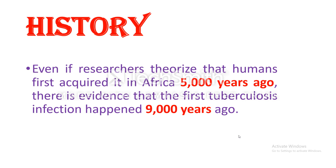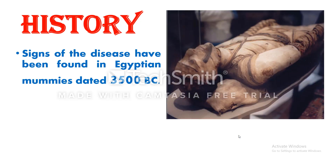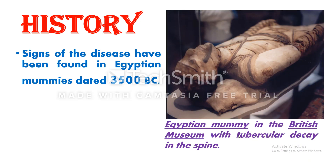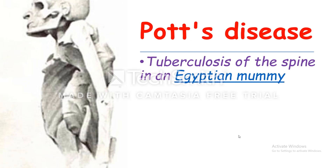Even if researchers theorize that humans first acquired tuberculosis in Africa 5,000 years ago, there is evidence that the first tuberculosis infection happened 9,000 years ago. Signs of the disease have been found in Egyptian mummies dated 3,500 years BC — this is an Egyptian mummy found in the British Museum with tubercular decay in the spine.